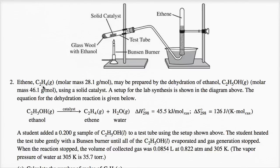Ethene, C2H4, has a molar mass of 28.1 grams per mole, and may be prepared by the dehydration of ethanol, C2H5OH, which has a molar mass of 46.1 grams per mole, using a solid catalyst.